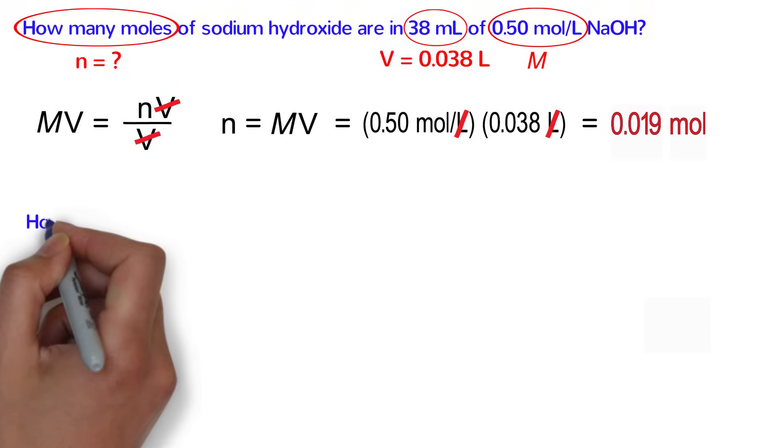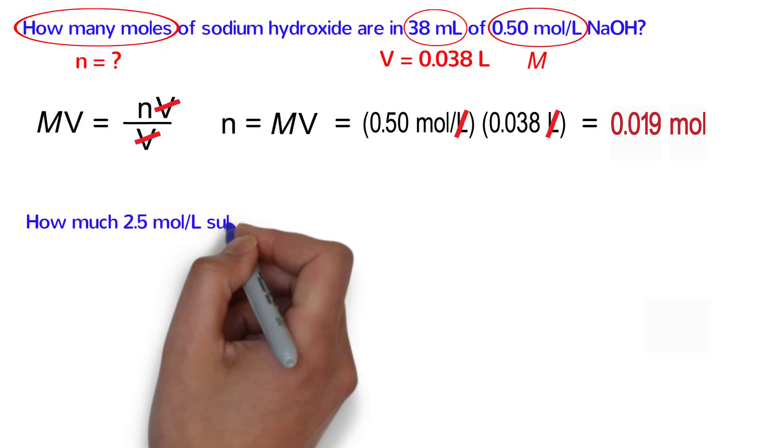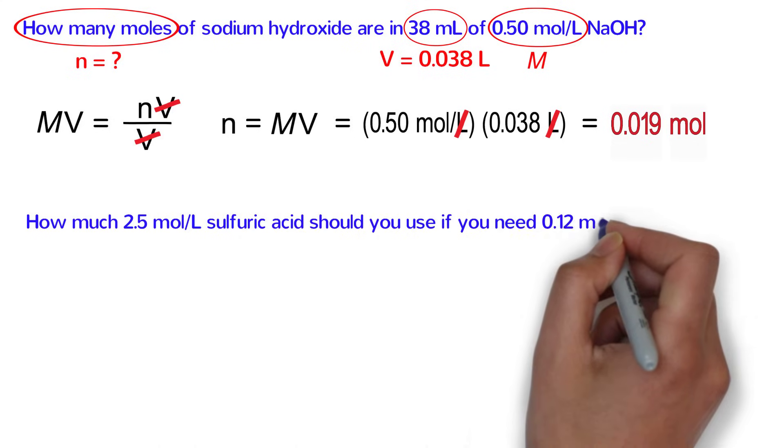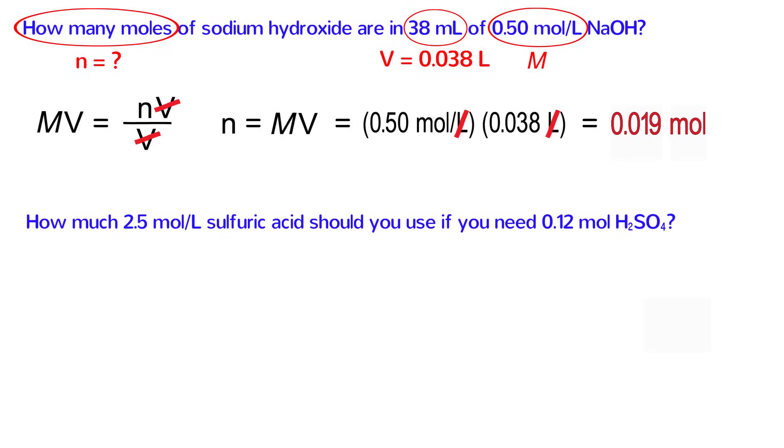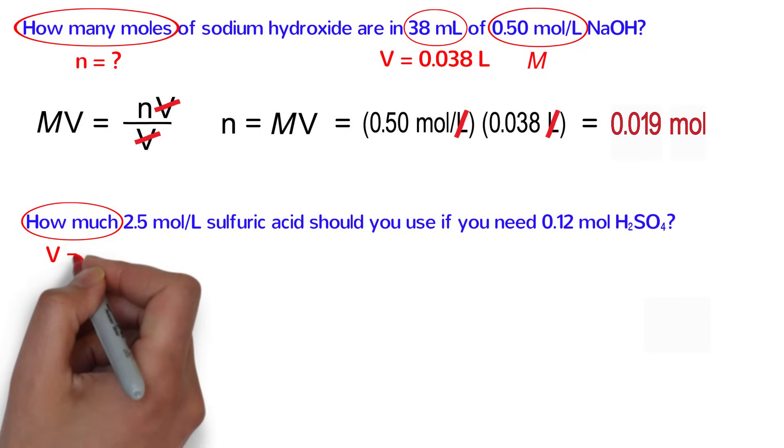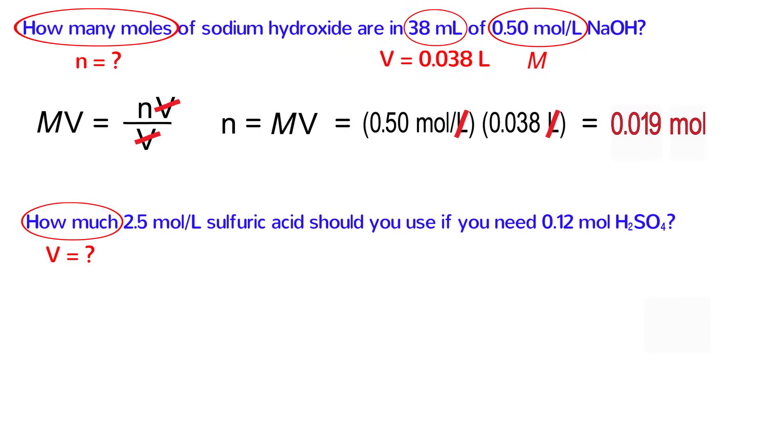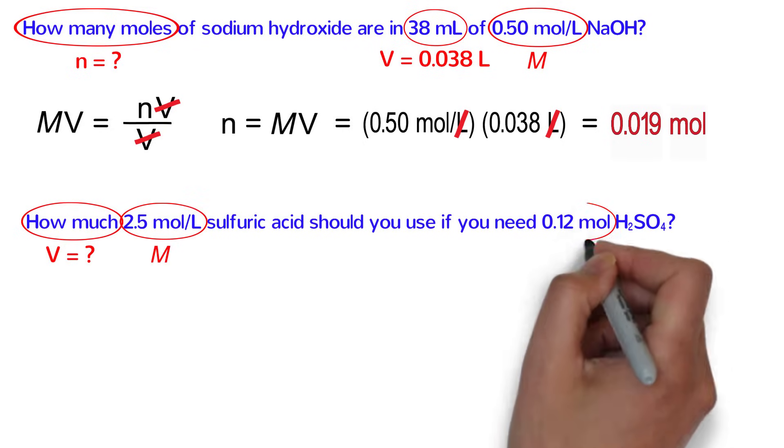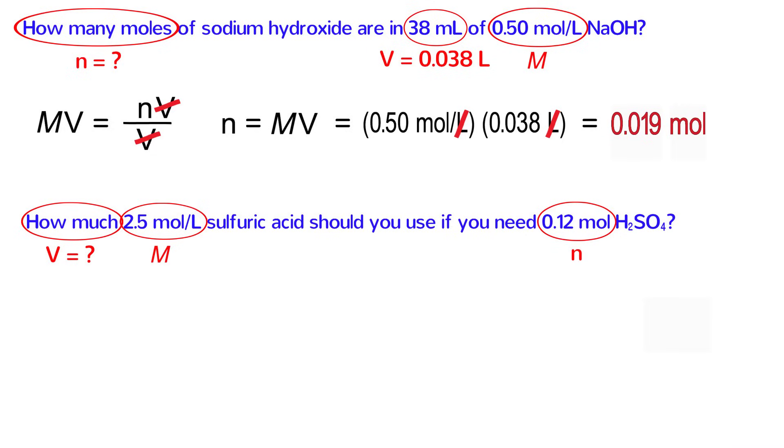Let's try another one. How much 2.5 mole per liter sulfuric acid should you use if you need 0.12 moles of sulfuric acid? This problem simply asks us how much sulfuric acid, which is a little vague, but think about what you would do in a lab. How would you measure out a solution of sulfuric acid? By its volume, of course. So the problem is asking us to solve for volume. 2.5 moles per liter is the molarity, and 0.12 moles is N. Next, write down the appropriate equation.